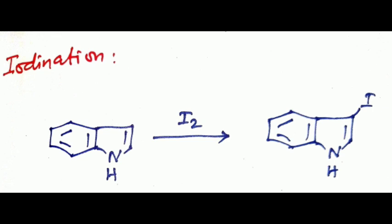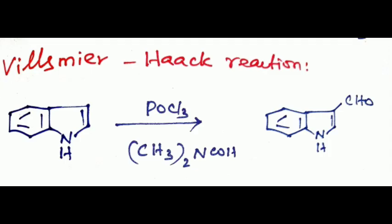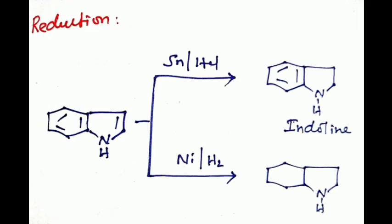Next is Reimer-Tiemann formylation. Here indole reacts with chloroform in the presence of sodium hydroxide to form 3-formyl indole. Then Gatterman reaction: indole combined with hydrogen cyanide with hydrochloric acid to form the same product, 3-formyl indole with loss of ammonia. Then Vilsmeier-Haack reaction: indole combined with phosphorus oxychloride gives the same product, 3-formyl indole.